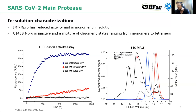In terms of oligomeric state, the mature form of the enzyme shown in blue is a perfect dimer. The immature form — containing three extra amino acids at the N-terminal — seems to prevent dimerization, so the protein was mostly found as monomers.